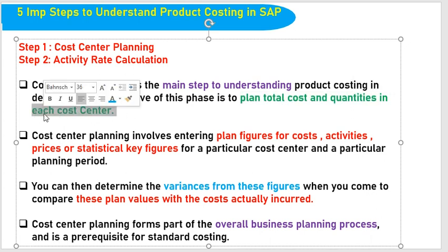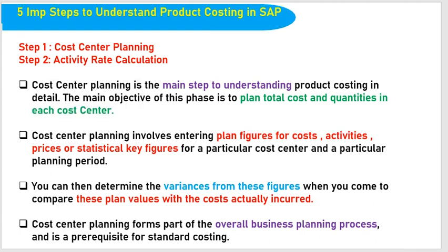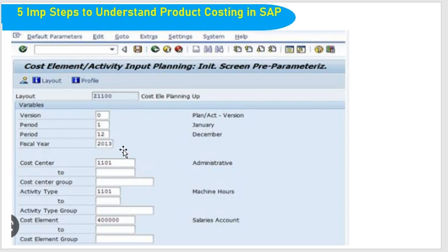There is a T-code for cost center planning: KP06. I will show you right now. In KP06, you can give the version and period. When planning for a year, you take period 1 to 12 and the fiscal year. If you are planning for administration cost, you give the administration cost center details — the cost center, activity type such as machine hours, and cost elements you are planning for.